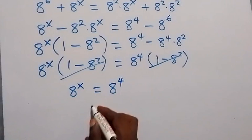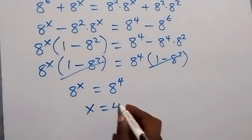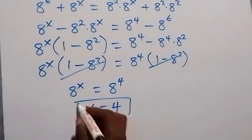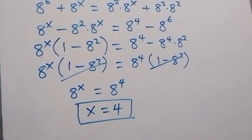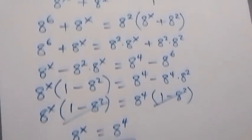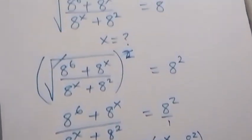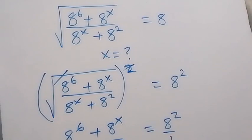If these are equal, then from here, x equals to 4. So the value of x in this problem is x equals to 4. Let's confirm if this will satisfy the given problem — I'll substitute x equals to 4 in the given problem from here.